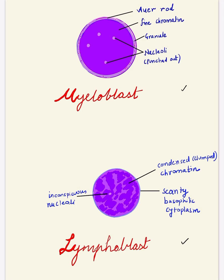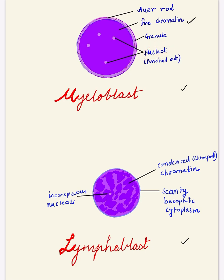In the myeloblast, the important points are the large nucleus which has fine chromatin. Fine chromatin means it is uniformly distributed — the chromatin is uniform throughout. Then in the nucleus you see nucleoli which are very sharp and punched out in appearance.